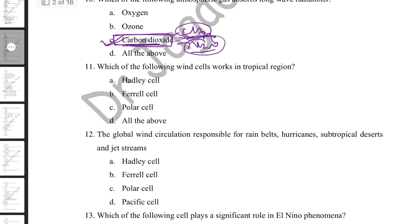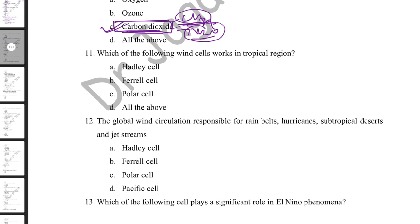Which wind cell works in the tropical region? In the tropical and subtropical regions, the Hadley cell operates. Other cells include the Ferrel cell and Polar cell in global wind circulation. The Hadley cell is responsible for rain belts, hurricanes, subtropical deserts, and jet streams in tropical and subtropical areas.